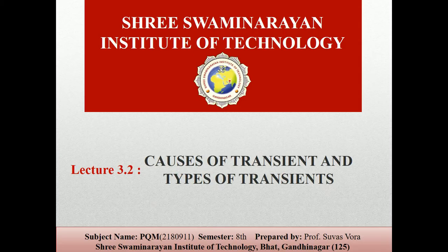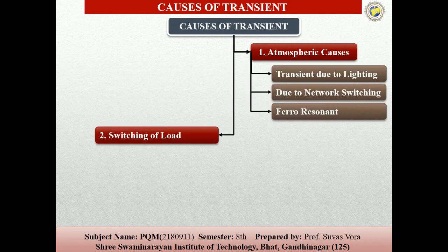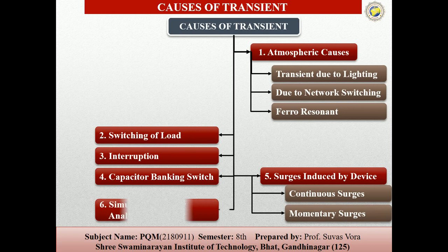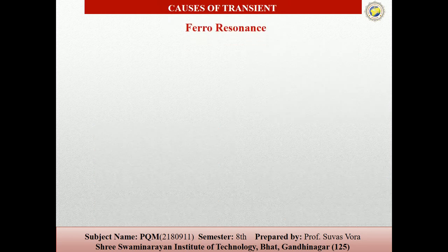Today's topic is the further causes of the transient and the types of transient. We have the atmospheric effect of the transient due to lightning. Now, ferroresonance — this is a particular type of resonance that includes capacitance and inductors, where the inductor is non-linear and is used for equipment which has iron losses.